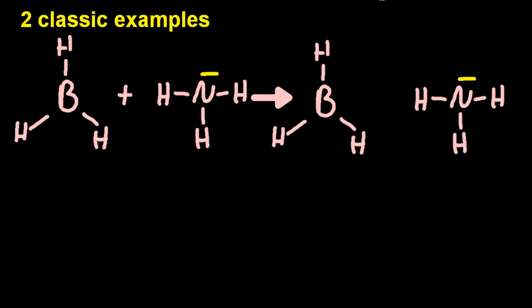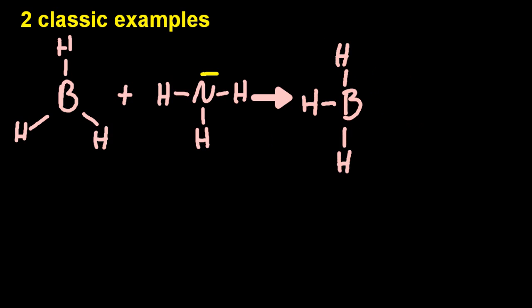The first one is boron trihydride and ammonia. So, if I put those together, the lone pair on the nitrogen from the ammonia makes a dative covalent bond with that central boron atom. And I'm going to draw an arrow to show what a dative covalent bond is there.